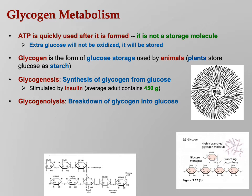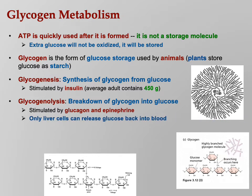Glycogenolysis — lysis means to break down, so glycogenolysis means breaking down glycogen back into glucose. Glycogenesis and glycogenolysis are opposites of one another. Glycogenolysis is stimulated by glucagon and epinephrine. Insulin and glucagon are antagonistic hormones: insulin lowers blood sugar by storing glucose as glycogen, while glucagon raises blood sugar by breaking down glycogen and returning glucose to the blood. Only liver cells can release glucose back into the blood; skeletal muscle glycogen is only used in that muscle.